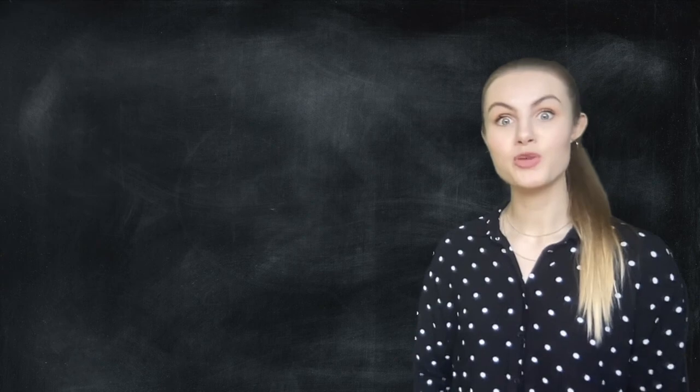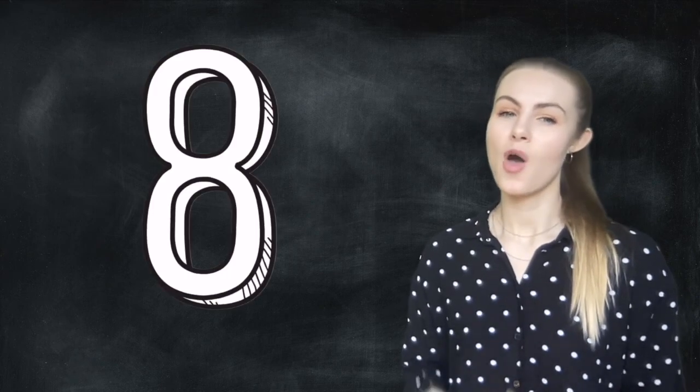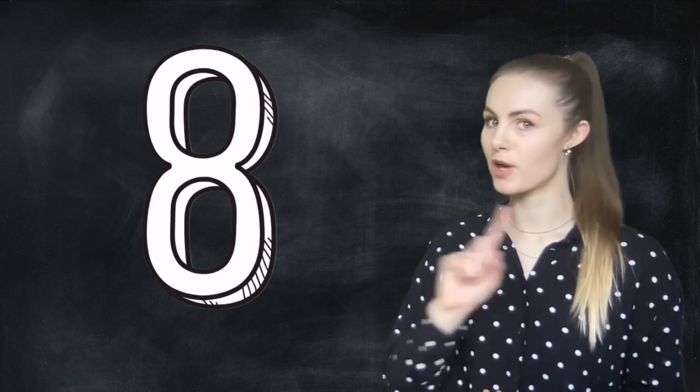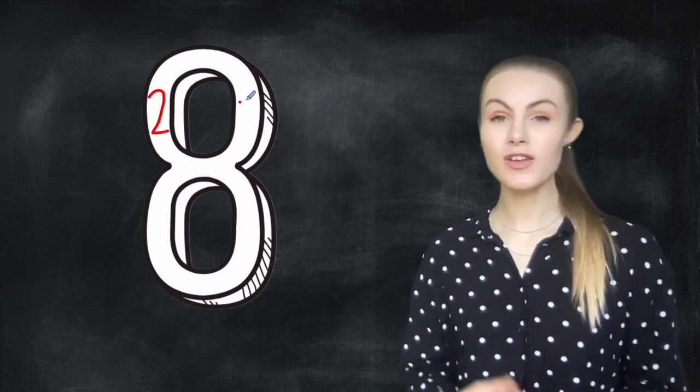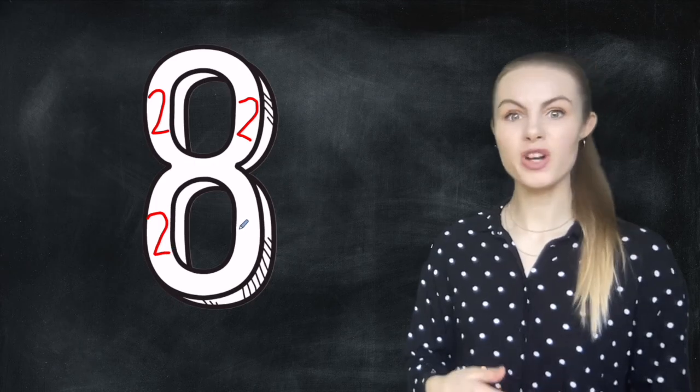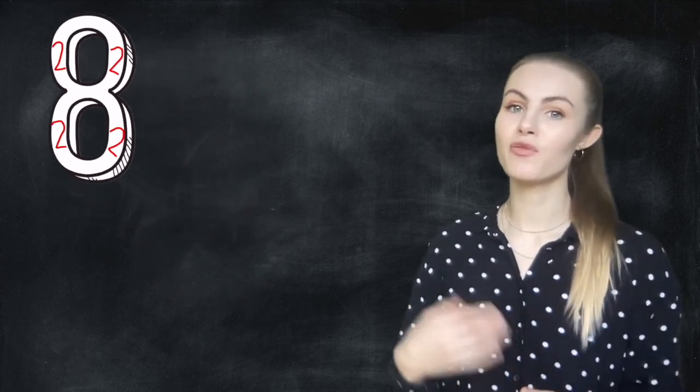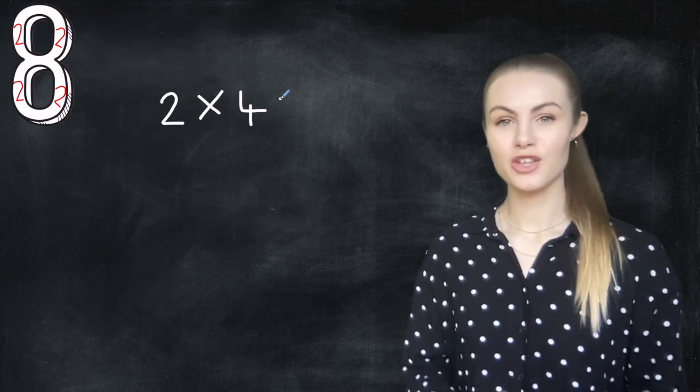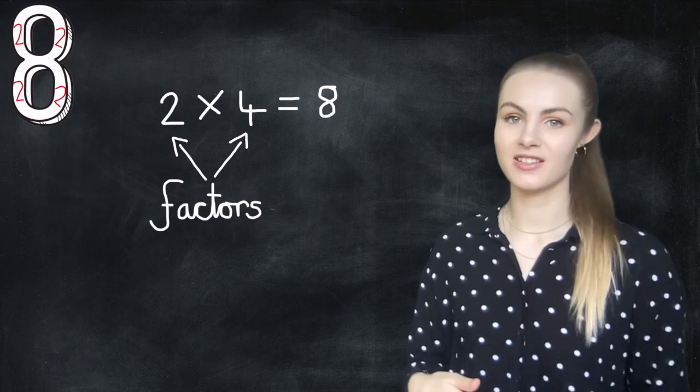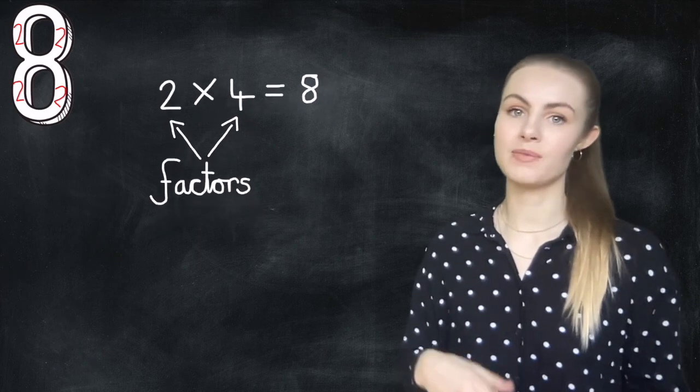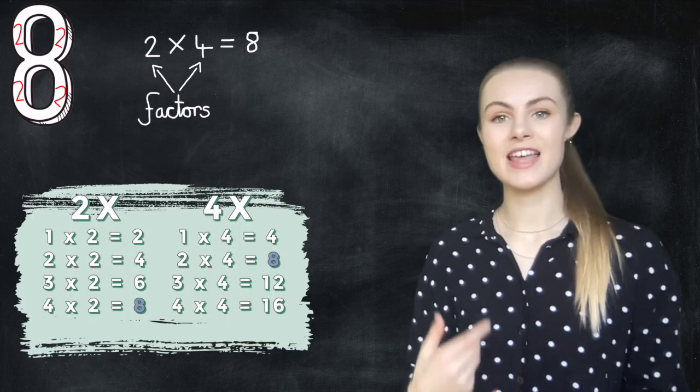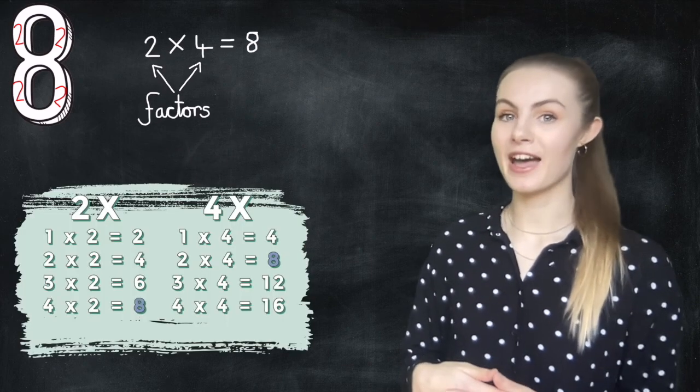For example, you could be given 8. Which numbers go into 8 perfectly? Remember, no remainders allowed. Well, 2 does and it fits in 4 times, or in other words when you multiply 2 and 4 together you get 8. So 2 and 4 are factors of 8. I know this is correct because 8 is in the 2 times table and the 4 times table. This means that 8 is divisible by 2 and 4.